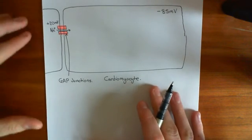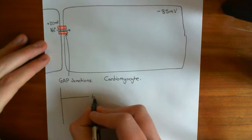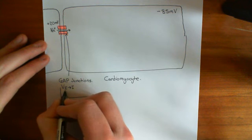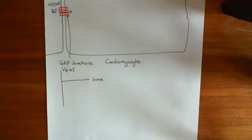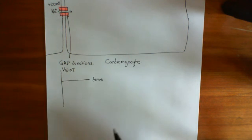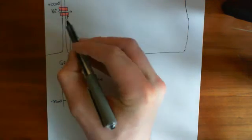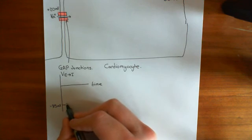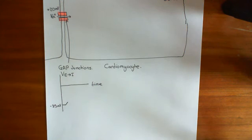Let's draw this on a graph — plotting voltage against time, from extracellular to intracellular. I always note where we're going from and to, because the electrical potential difference is the difference between two points. Usually the membrane potential sits at around minus 85 millivolts. Now, as sodium ions enter, the cell is depolarizing — the electrical potential difference across the membrane gets less negative, giving us a small depolarizing portion on the graph.